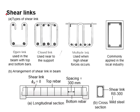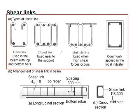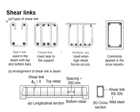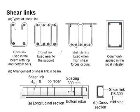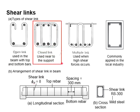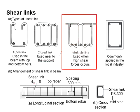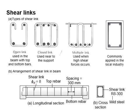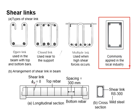This diagram shows different types of shear links. This shear link is used to tie the top and bottom reinforcement bar. The closed links are normally used at the support. The multiple links are normally used when there is a high shear force. Normally, in our local industry, this type of shear link is used.